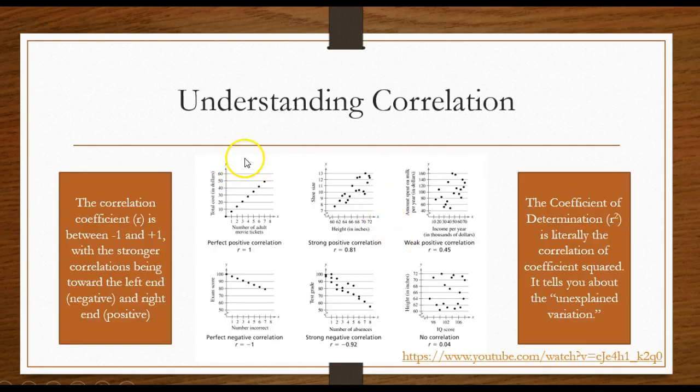Understanding correlation. When we talk about the regression equation we need to understand the correlation. The correlation coefficient r is always between negative 1 and positive 1. Think about it this way. The stronger the correlation, it's getting closer either to the left which would be negative correlation or stronger to the right which would be positive correlation. If you have a correlation coefficient close to 0 it's almost no correlation.